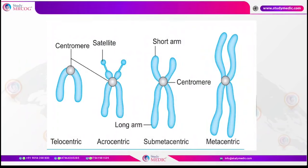Based on the position of the centromere, a chromosome can be metacentric, where the centromere is exactly at the center. If the centromere is towards one end, it is submetacentric. If it is very near to one end, it is known as acrocentric, where the short arm is very short and the long arm is very long. The significance of acrocentric chromosomes in humans is that a Robertsonian translocation can occur in acrocentric chromosomes.